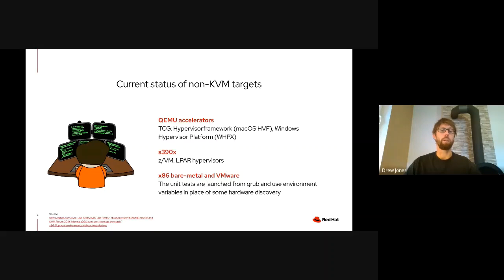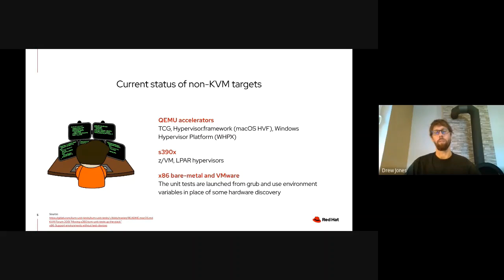Just a bit over a year ago, VMware contributors posted over 50 patches to KVM unit tests in order to enable the tests to run on bare metal and on VMware. The approach used is to launch the test from Grub, and they also used a lesser-known feature of KVM unit tests — environment variables — which allows a nice way to configure tests for different environments without having to recompile them.